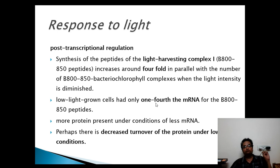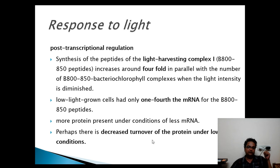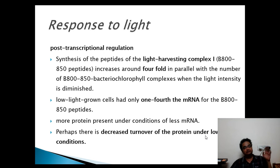Low-light-grown cells had one fourth of the mRNA for these peptides, yet more proteins are present under conditions of less mRNA because there is less turnover of this protein under low light. When light intensity is high, these proteins may get degraded and therefore more proteins need to be synthesized, giving a higher turnover rate. But when light intensities are low, these proteins are protected and additionally some proteins are synthesized from the existing mRNA.